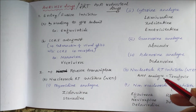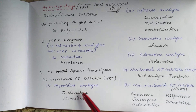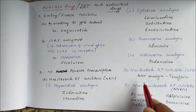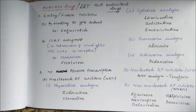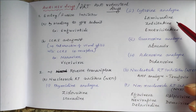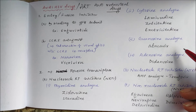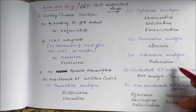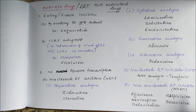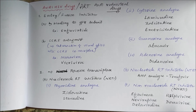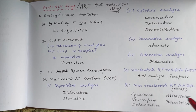Nucleoside plus phosphate forms a nucleotide. Thymidine analogues include zidovudine and stavudine; cytosine analogues include lamivudine, zalcitabine, and emtricitabine; guanosine analogues include abacavir; adenosine analogues include didanosine. Nucleotide reverse transcriptase inhibitors (NtRTIs) include adenosine monophosphate analogues like tenofovir. Non-nucleoside reverse transcriptase inhibitors (NNRTIs) — which directly bind to the catalytic site of reverse transcriptase — include efavirenz, nevirapine, delavirdine, rilpivirine, and doravirine.